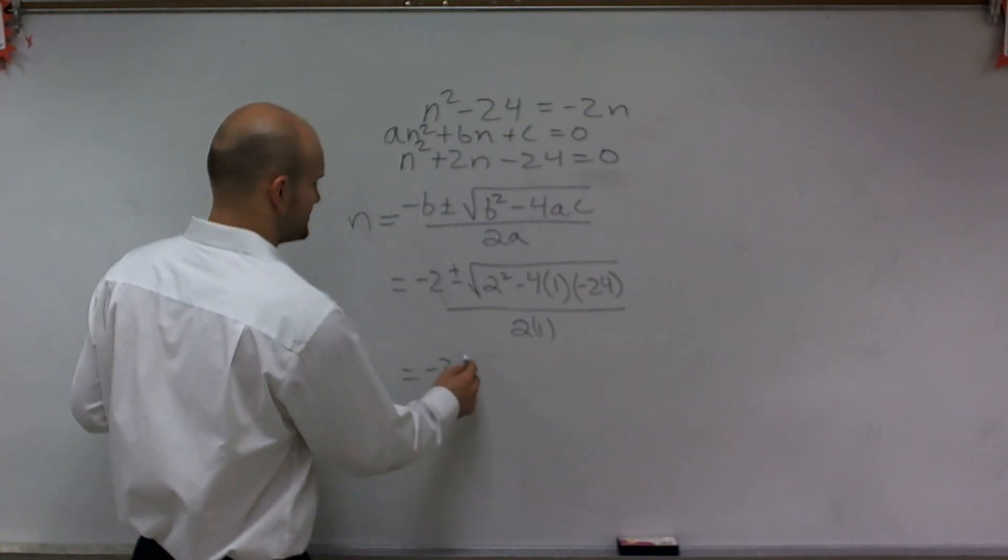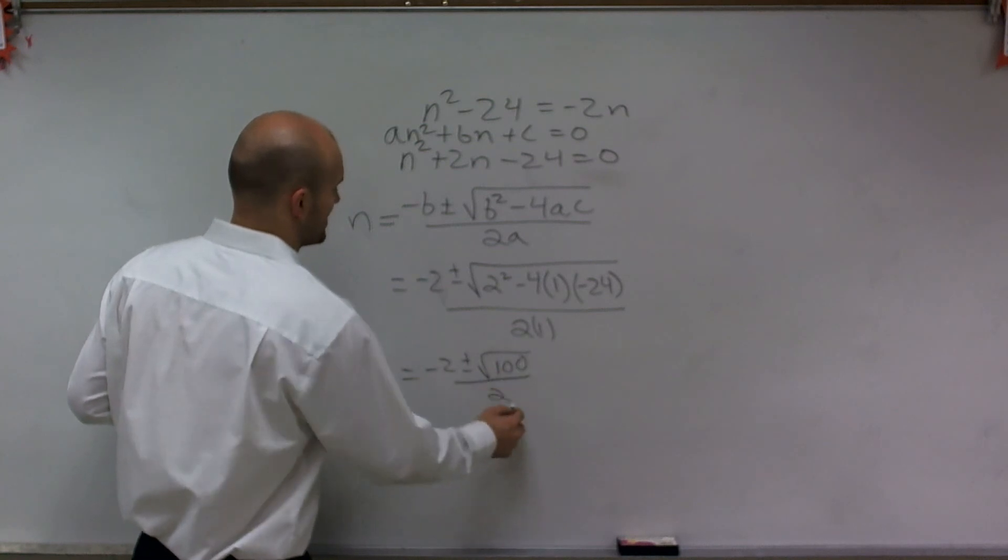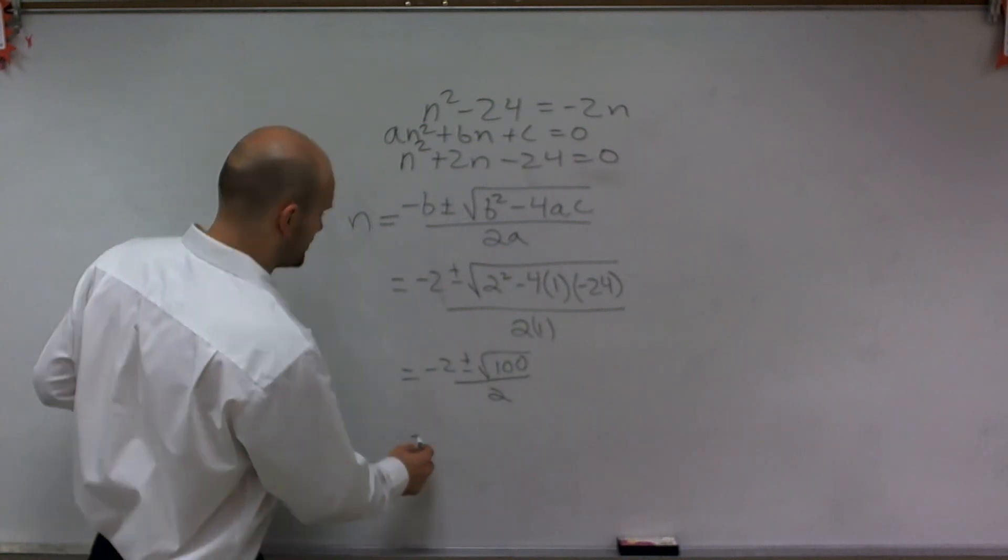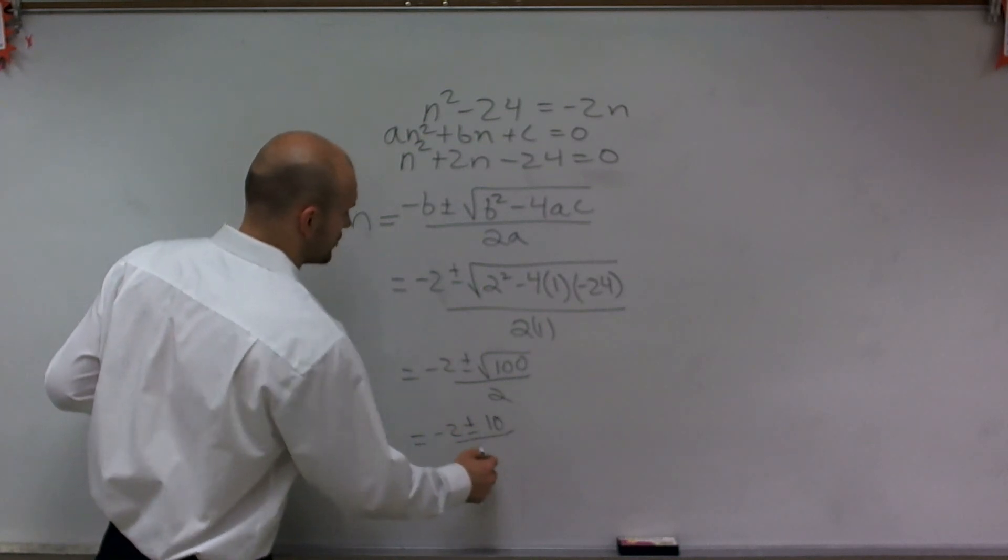So I have -2 ± √100 / 2. We should know that the square root of 100 is 10. So -2 ± 10 / 2.